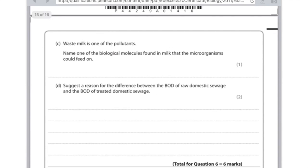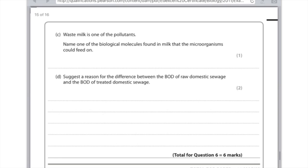Waste milk is one of the pollutants. Name one of the biological molecules found in milk that microorganisms could feed on. Milk contains protein, which means amino acids. You could have written lipids, fats, carbohydrate, or the sugar found in milk, which is lactose. Anything sensible. Suggest a reason for the difference between the BOD of raw domestic sewage and treated domestic sewage.